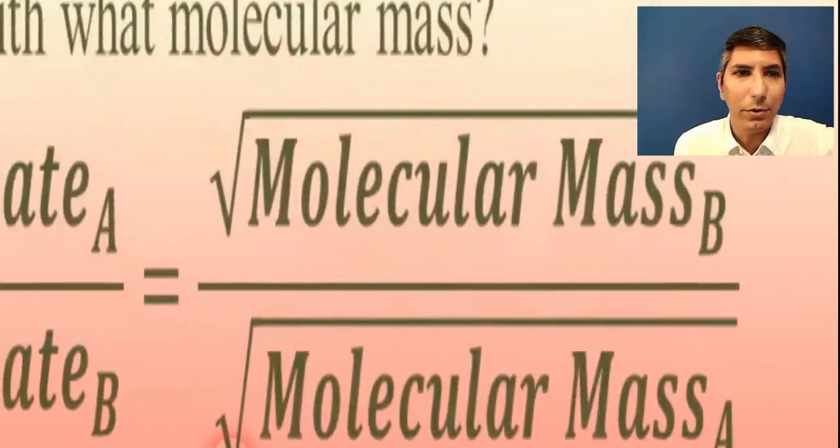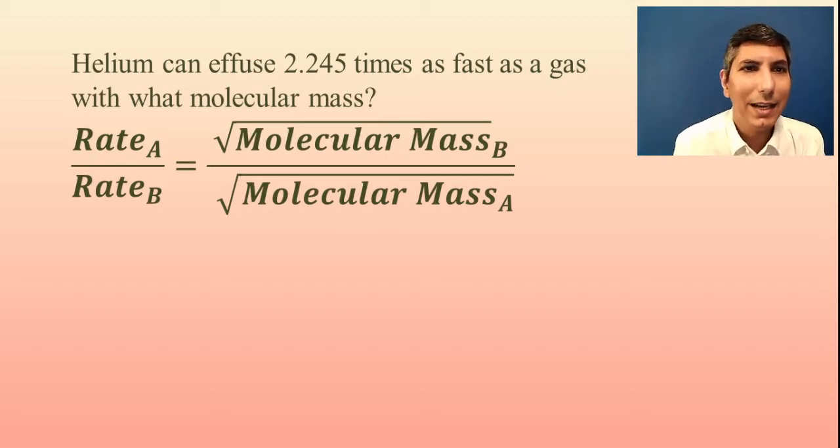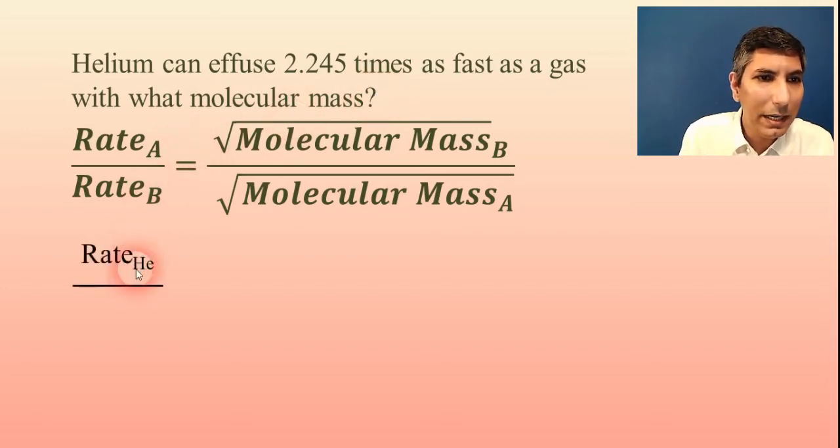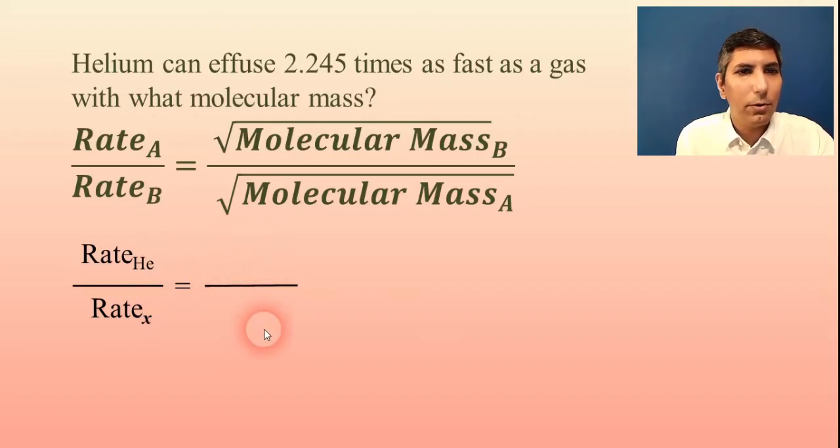Let's try another example that is a little bit more challenging. This time we have helium can effuse 2.245 times as fast as a gas with what molecular mass? So this is a little bit different because in this problem, it actually comes right out and tells us which gas is faster, right? It tells us that helium is going faster than some mystery gas that we don't know what it is. We're trying to find out what is that molecular mass. Now, the faster gas is also the lighter gas. So I'm going to plug in helium as gas A and then gas B. We'll call it X because I don't know what it is yet.